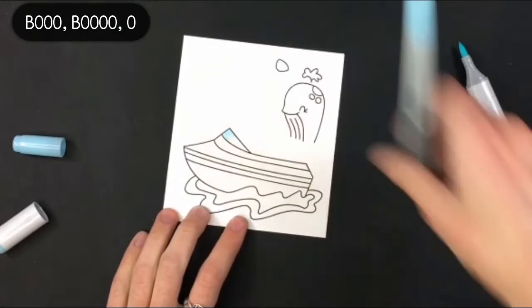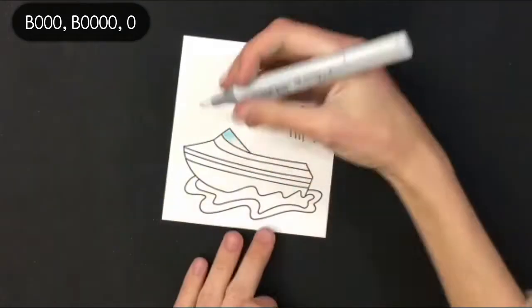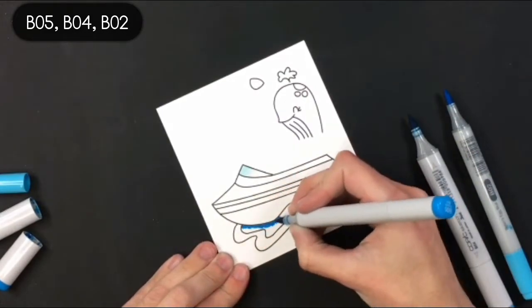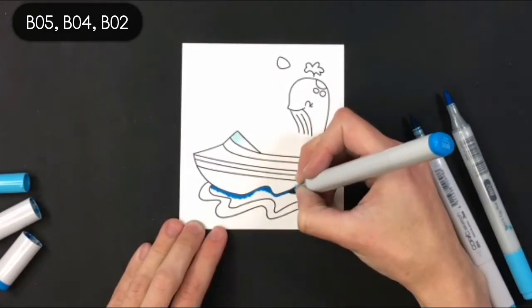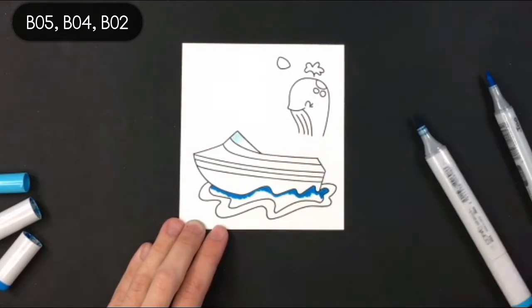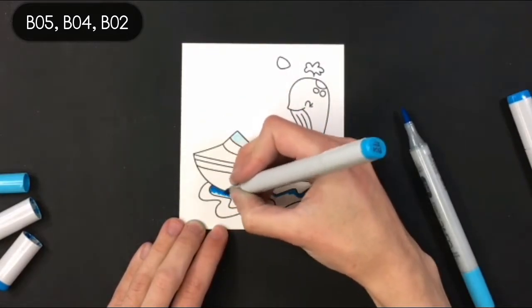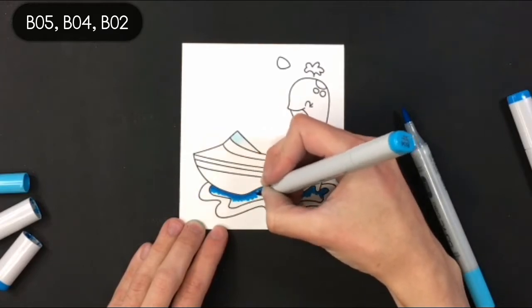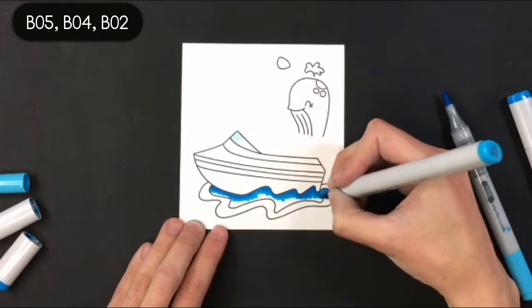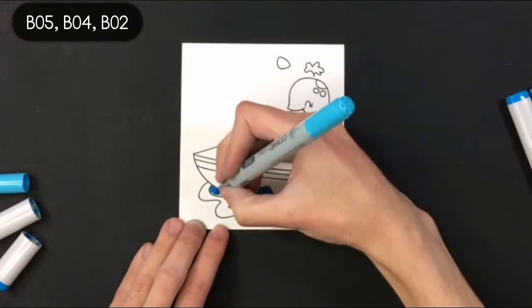For today's Copic coloring I wanted to do something a little bit different since you've already seen me color this boat twice before, and if you haven't seen my previous videos in this series I will link them at the top for you to watch. So I did do the same thing for the water below with the waves and for the whale's spout but I did change up the color for the whale this time and I wanted to do a different Copic technique for the actual boat.